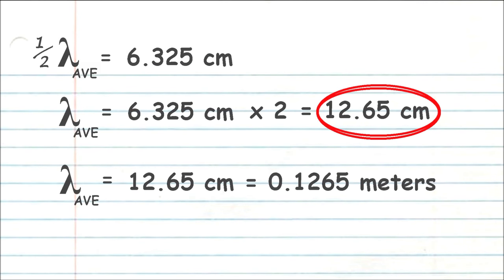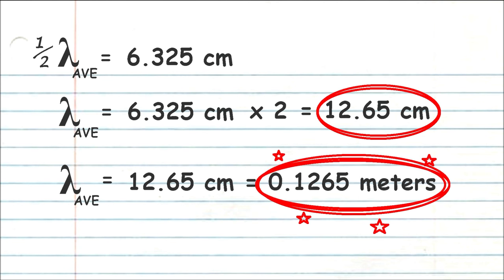Now that's in centimeters. For this calculation to work, I'm going to need to put that into meters. There's 100 centimeters in a meter, so to convert your wavelength measurement from centimeters to meters, you need to divide it by 100. Or, in other words, just move the decimal place two spots to the left. You can see that the wavelength for my microwaves is 0.1265 meters.